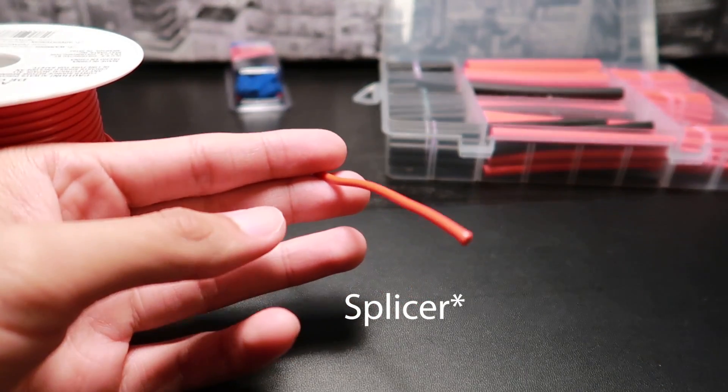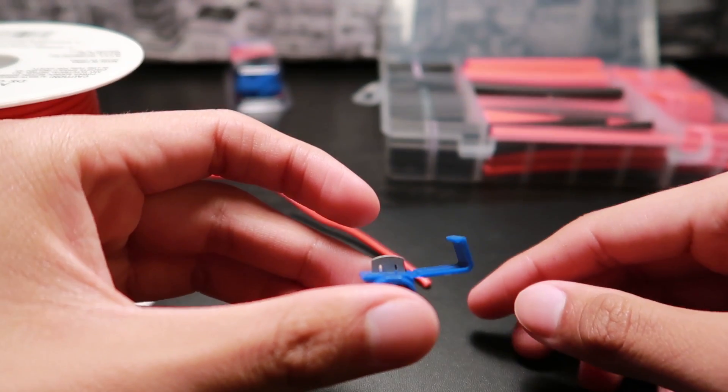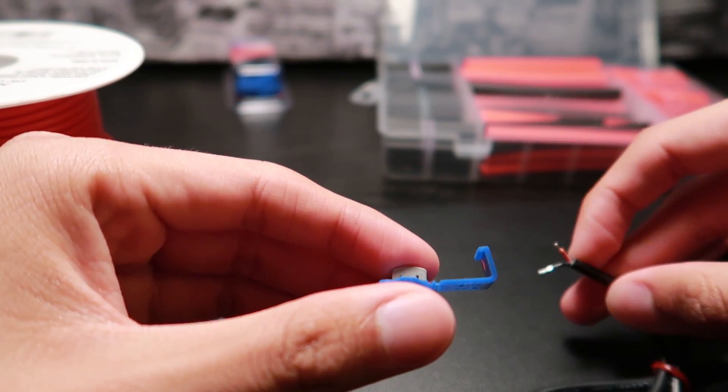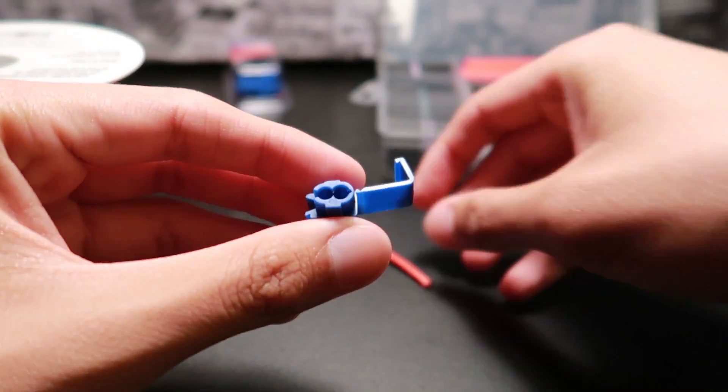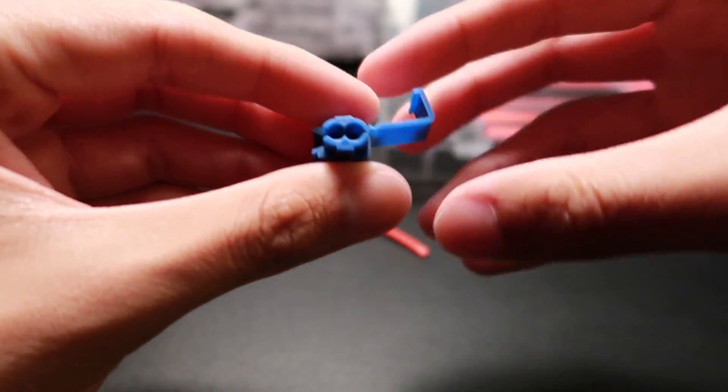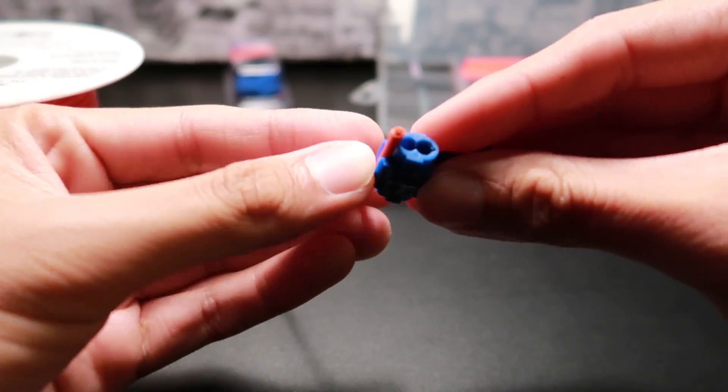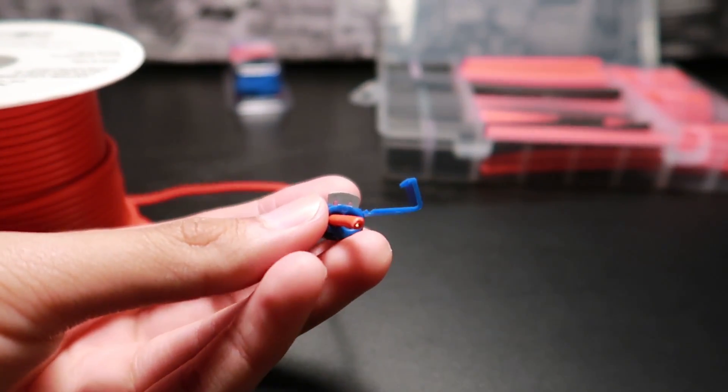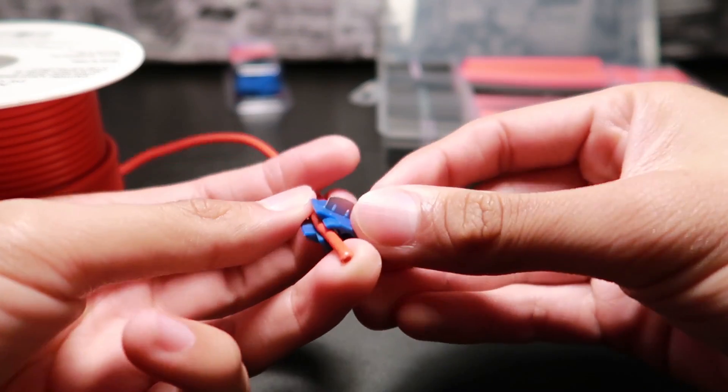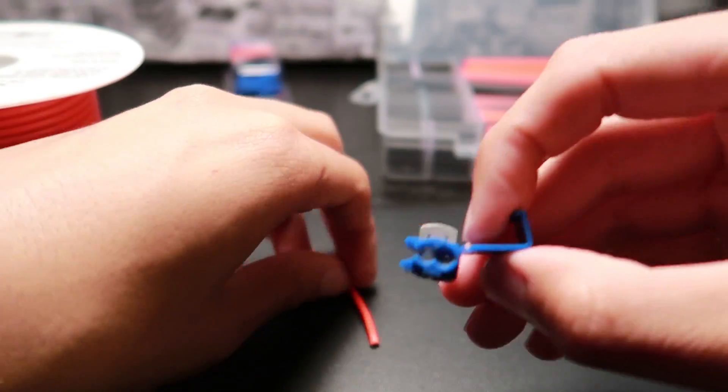Once you have your wires extended, this is the splicer. It's going to allow us to tap into the positive terminal that's already on our cars. This one, if you can see here, you can slide a wire straight to the side right here. The wire that's going to slide in like this is going to be the one from the harness that's already in the car. And this spot right here where you can't slide the wire in is where you're going to want to put the newly extended wire through.